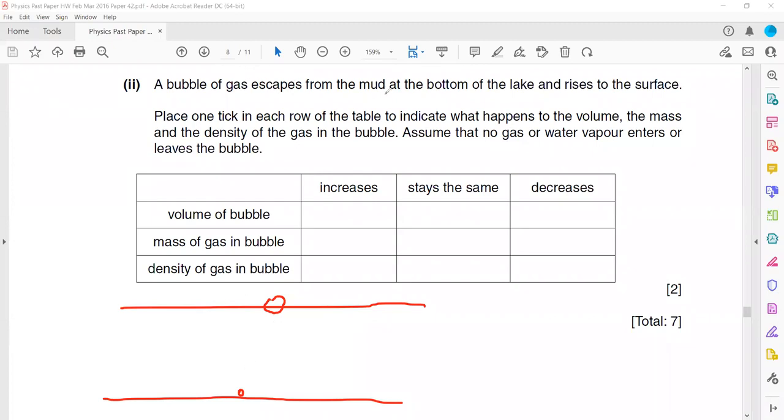So a bubble of gas escapes from the mud at the bottom of a lake and rises to the surface. Place one tick in each row of the table to indicate what happens to the volume, the mass, and the density. Mass means number of particles, so the number of particles does not change. It will stay the same.